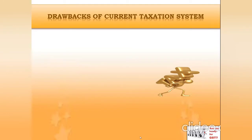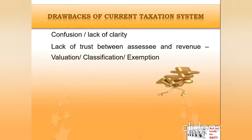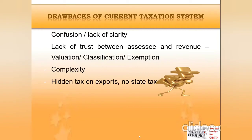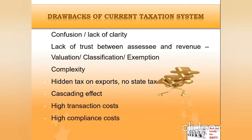Now let us have a quick view on the drawbacks of the current taxation system. First, confusion or lack of clarity. Second, lack of trust between assessee and revenue based on valuation, classification, or exemption. Third, complexity in understanding. Next, hidden tax on exemption. Next, hidden tax on exports or no state tax. Next, cascading effect — which means tax on tax at each stage of a product's journey along the supply chain. Next, high transaction costs and high compliance costs. And too much litigation and disputes.